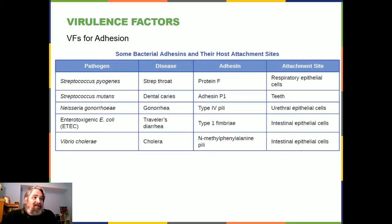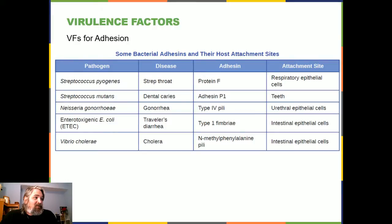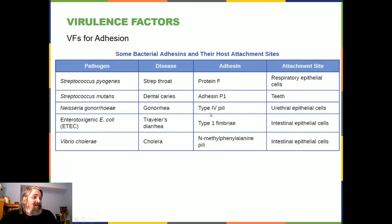This is a table of virulence factors for adhesion. Some things you're commonly familiar with: Streptococcus pyogenes, which causes strep throat, uses protein F and attaches to respiratory epithelial cells. Streptococcus mutans is mostly responsible for cavities. They all have different kinds of adhesins — Neisseria gonorrhea uses type 4 pili — and they all have their particular targets, using fimbriae or M-methylphenylalanine pili.